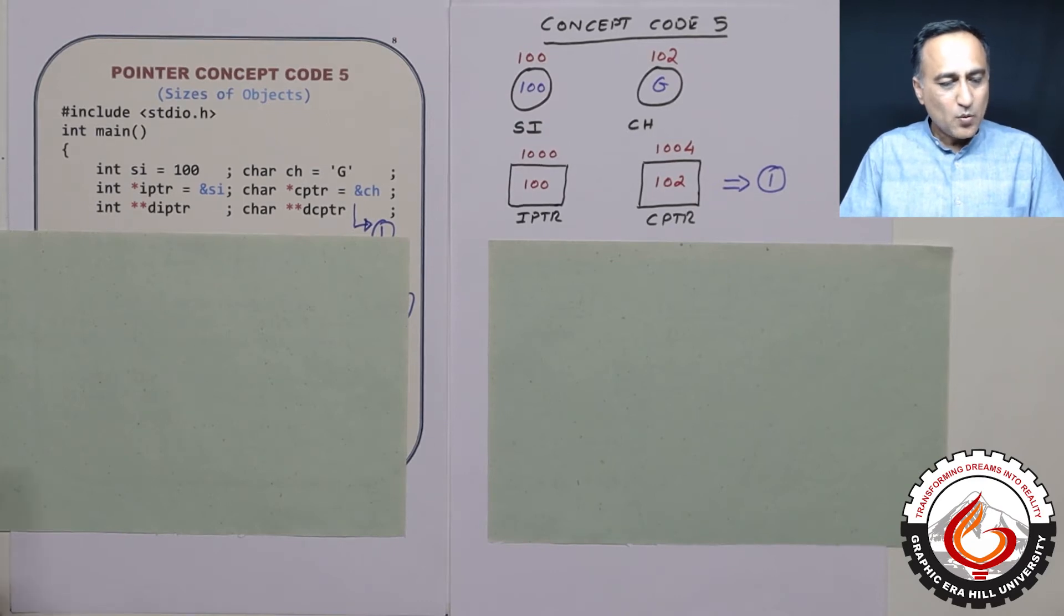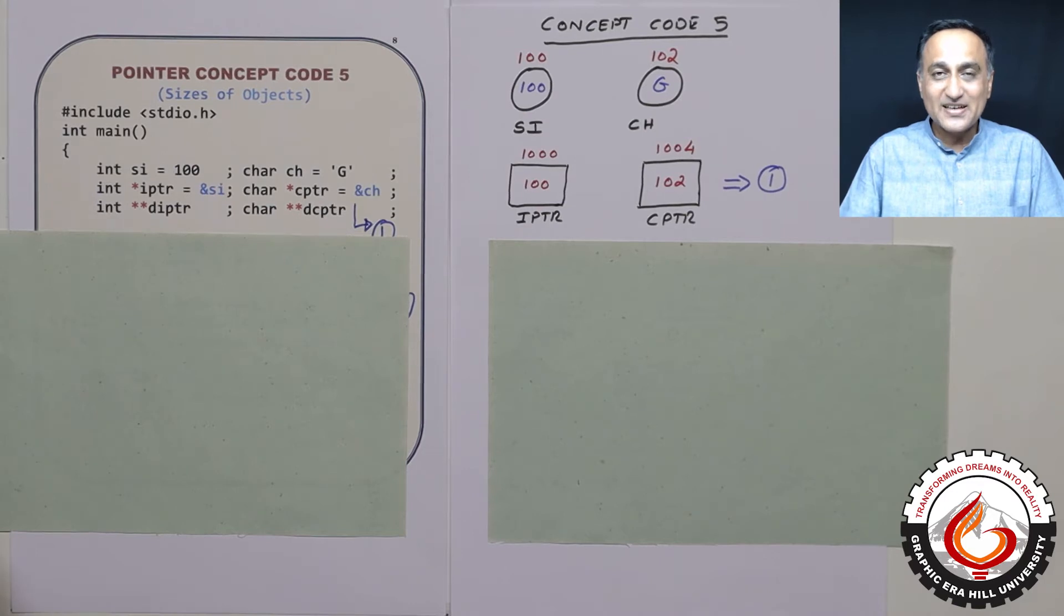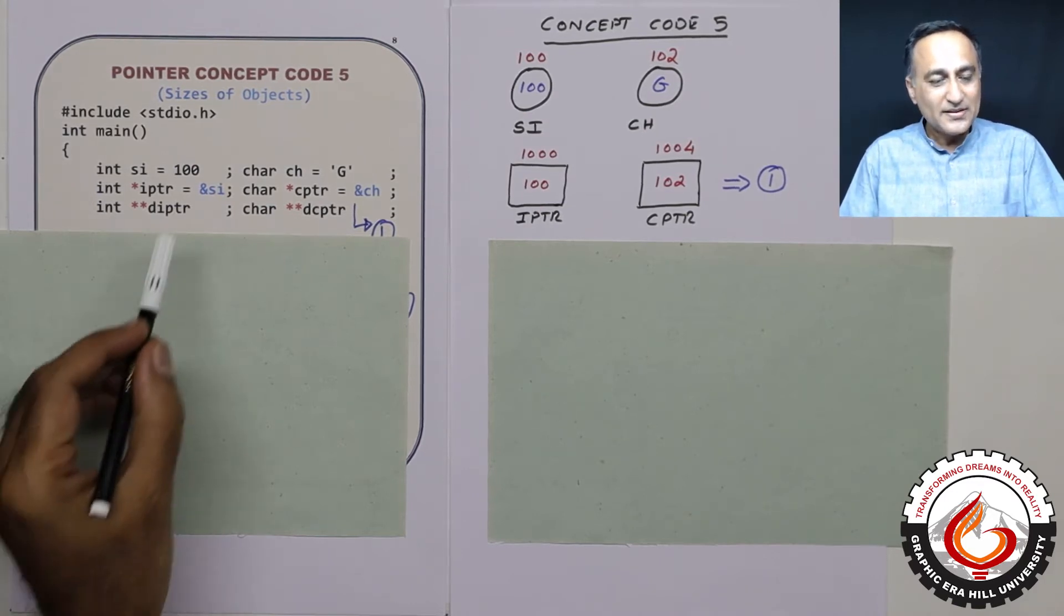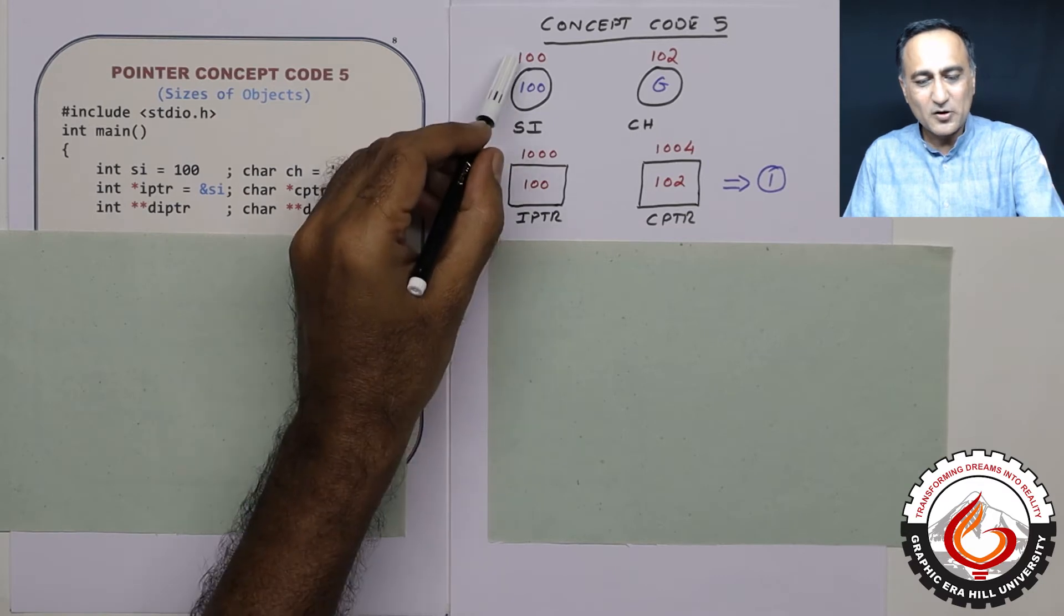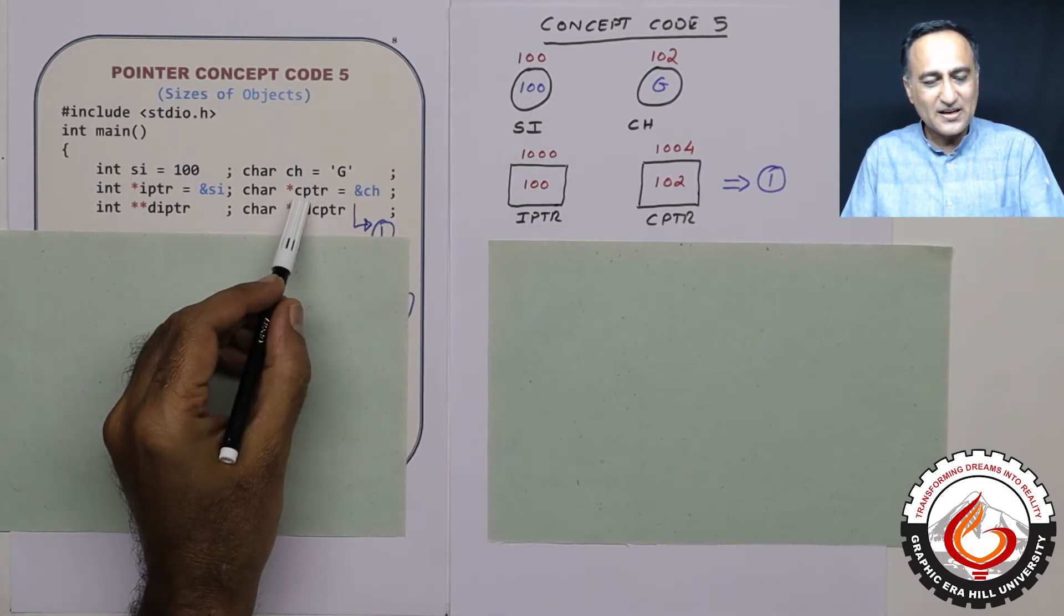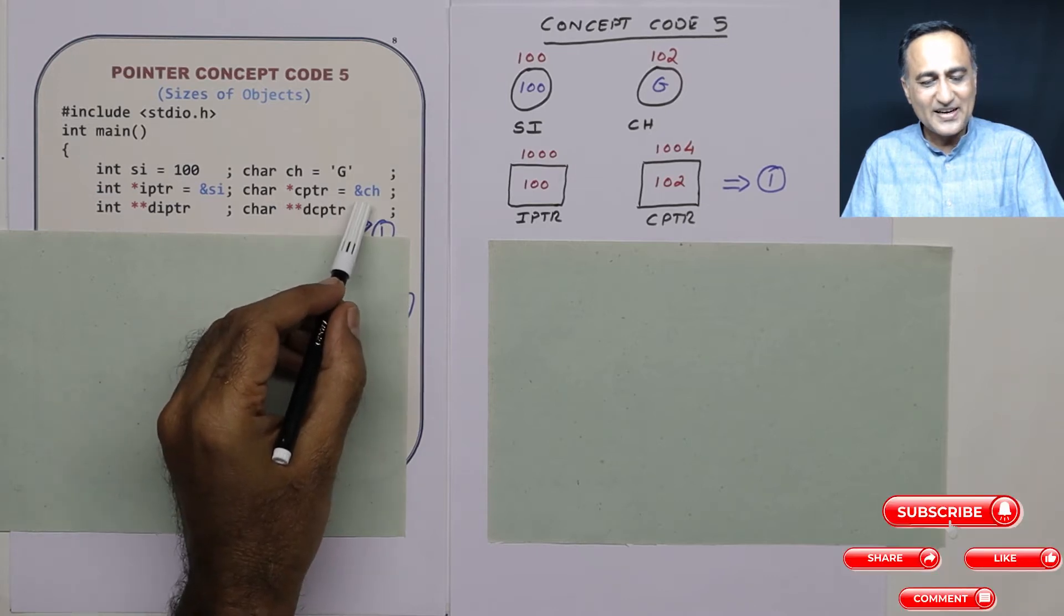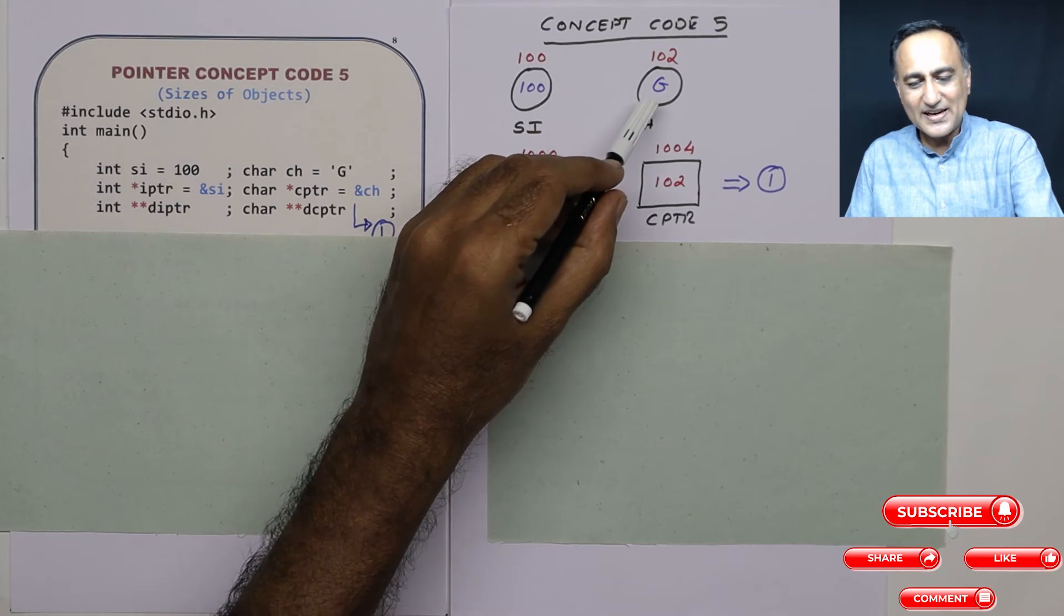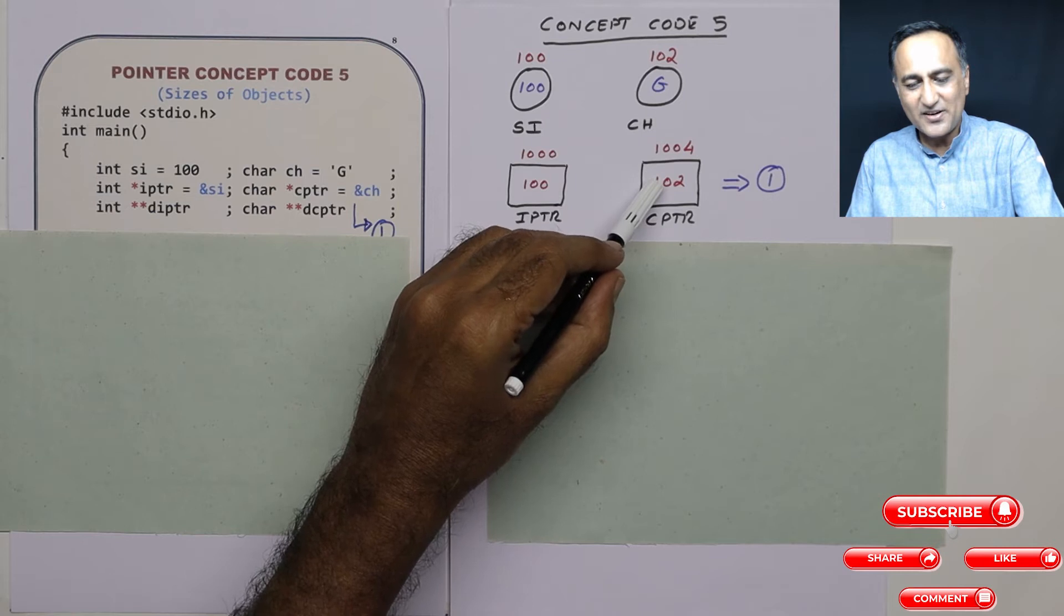Now I have declared a variable iptr which is of the type single star, that means it's a pointer to an integer type of variable. Thereby it contains the address of si. Address of si is 100. Similarly cptr is a pointer to a character type of data. It contains the address of ch. What is address of ch? It is 102. So cptr contains the address 102.